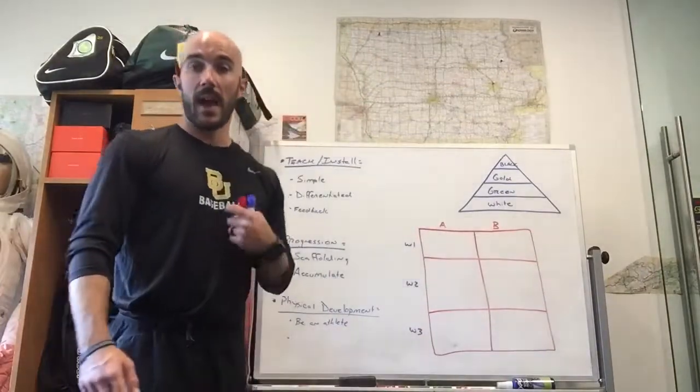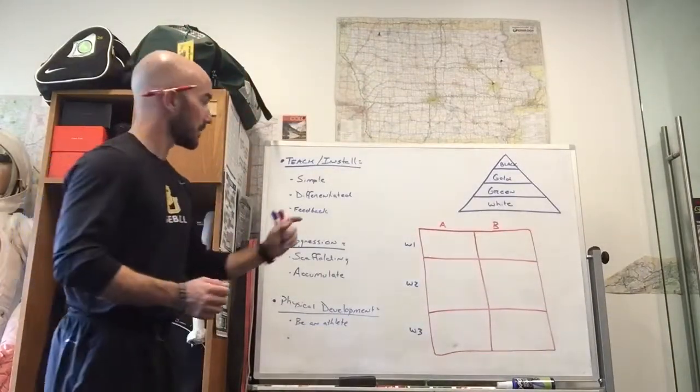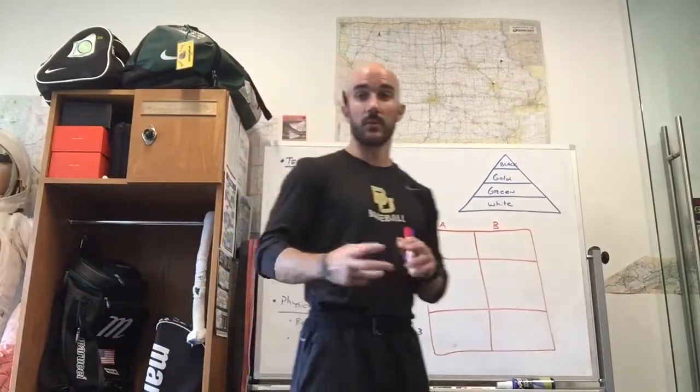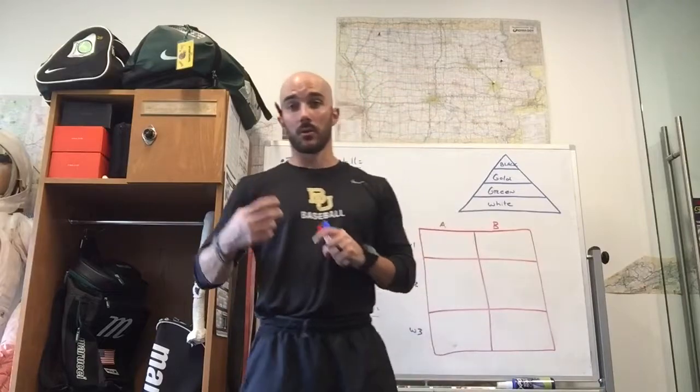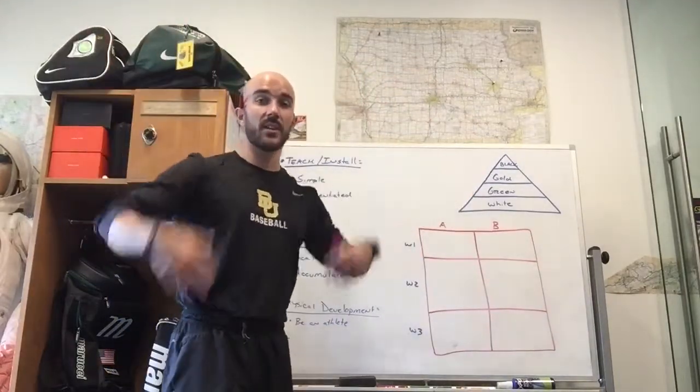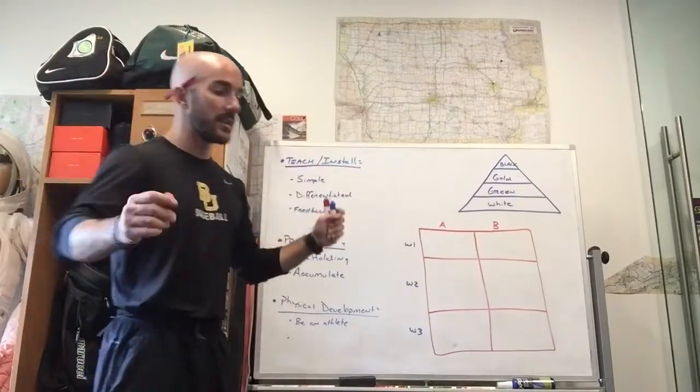Feedback, especially for young athletes, it needs to be extremely specific. So there's two different types of feedback and we've talked about this in other videos before but the two different types of feedback are just general feedback and that's basically to the group. Hey, good job, good job. Or continue, continue. Hey, remember knees out, knees out, knees out. I'm not talking to one specific athlete, I'm talking to the group.